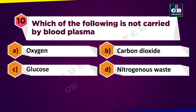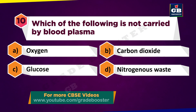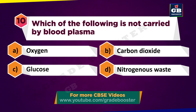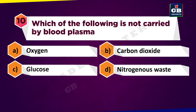Which of the following is not carried by blood plasma? A. Oxygen, B. Carbon dioxide, C. Glucose, D. Nitrogenous waste.